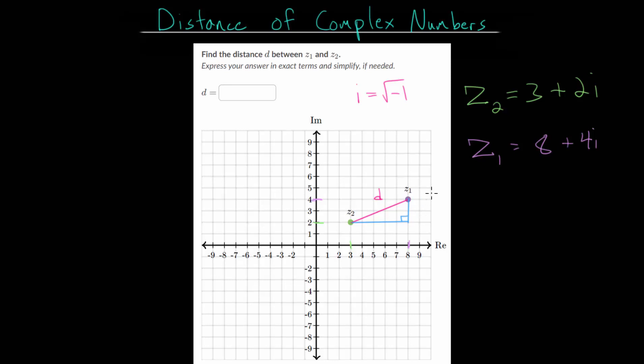We can count or find the difference between the imaginary values for this vertical line. Since the top imaginary value is at 4, and the bottom one is at 2, if we find their difference, 4 minus 2, we know that this length is just 2 units long. And of course, we can count that: 1, 2.